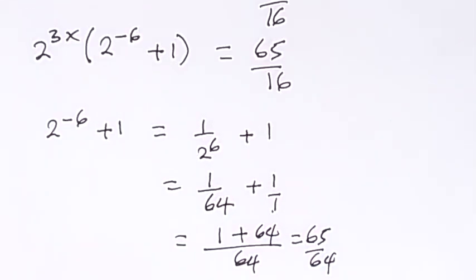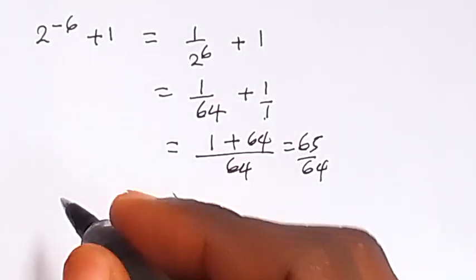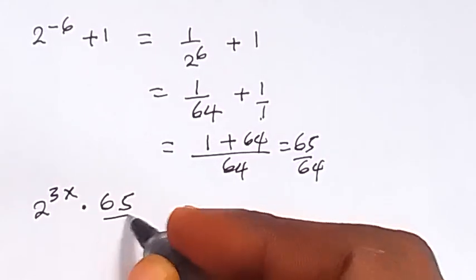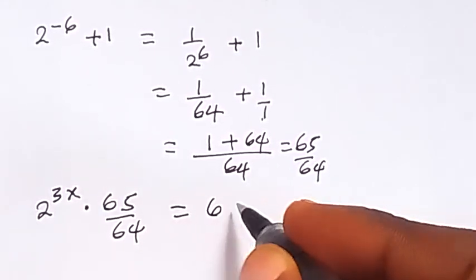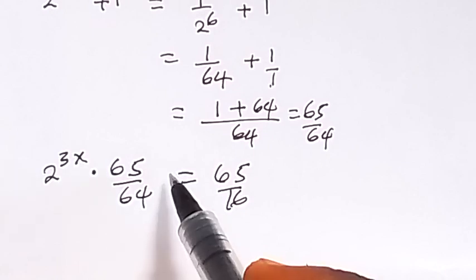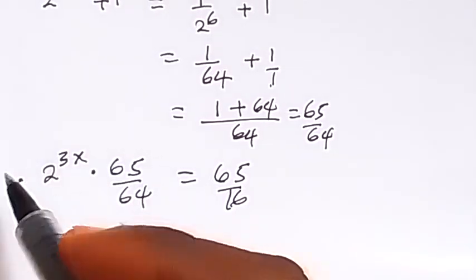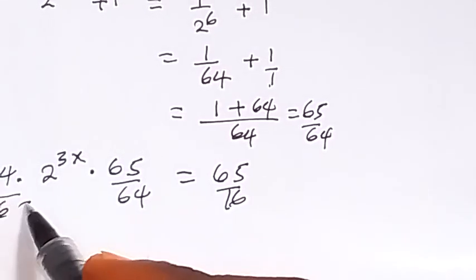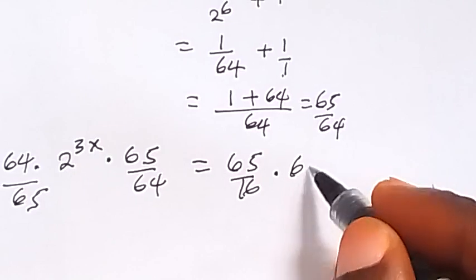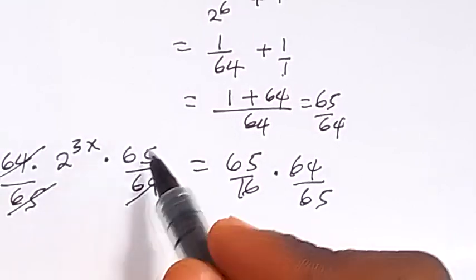So now we can rewrite this and put 65 over 64 in the bracket. That gives us 2 raised to power 3x, multiplied by 65 over 64, equals to 65 over 16. Now let's remove 65 over 64 from this side by multiplying both sides by its reciprocal, which is 64 over 65. So multiplying both sides by 64 over 65: 64 cancels 64, and 65 cancels 65.